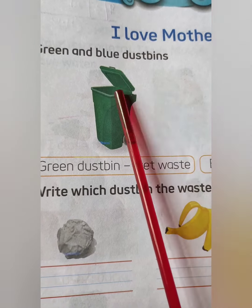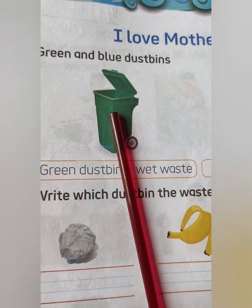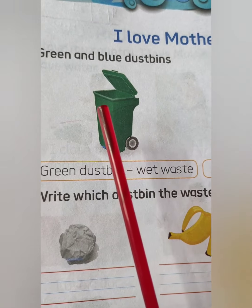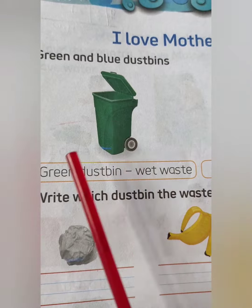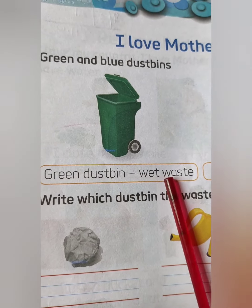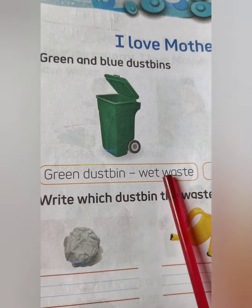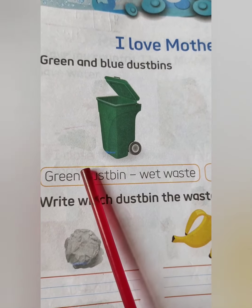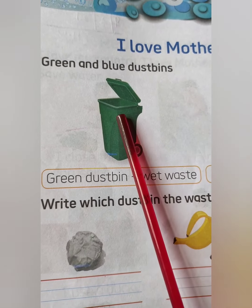Children, wet waste means gila kachra. Ab gila kachra kaun kausa ho sakta hai? Wet waste includes vegetable peels, used tea, fruits peels and leftovers — subziyon ka jo chilka hota hai, fruits ke jo chilke hote hai, chai patti hoti hai — that comes in wet waste. And this waste will go in the green dust bin.